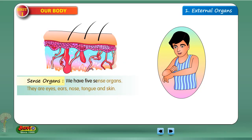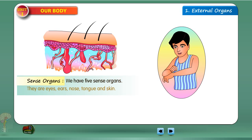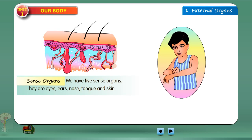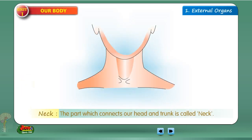The sense organs are eyes, ears, nose, tongue and skin. The part which connects our head and trunk is called neck.